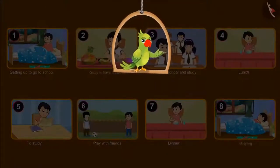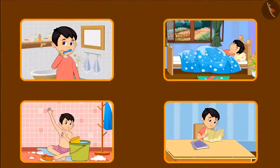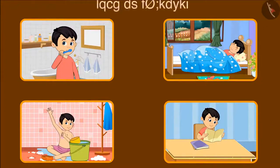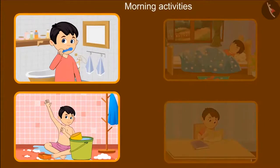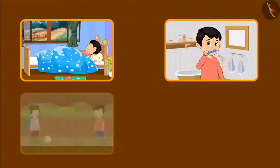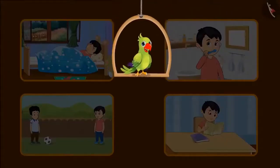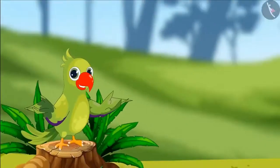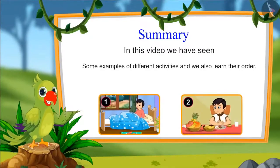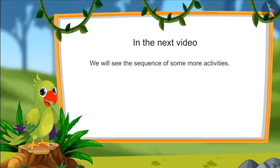So children, have you ever thought about your routine? Here are some activities that take place throughout the day. Can you tell which of these activities we do in the morning? Yes — in the morning we bathe and brush our teeth. And what do we do in the evening? We play in the evening, and we also study. These are activities that happen at different times throughout our day. That's all for today. In the next video we will see the sequence of some more activities. Bye-bye kids.